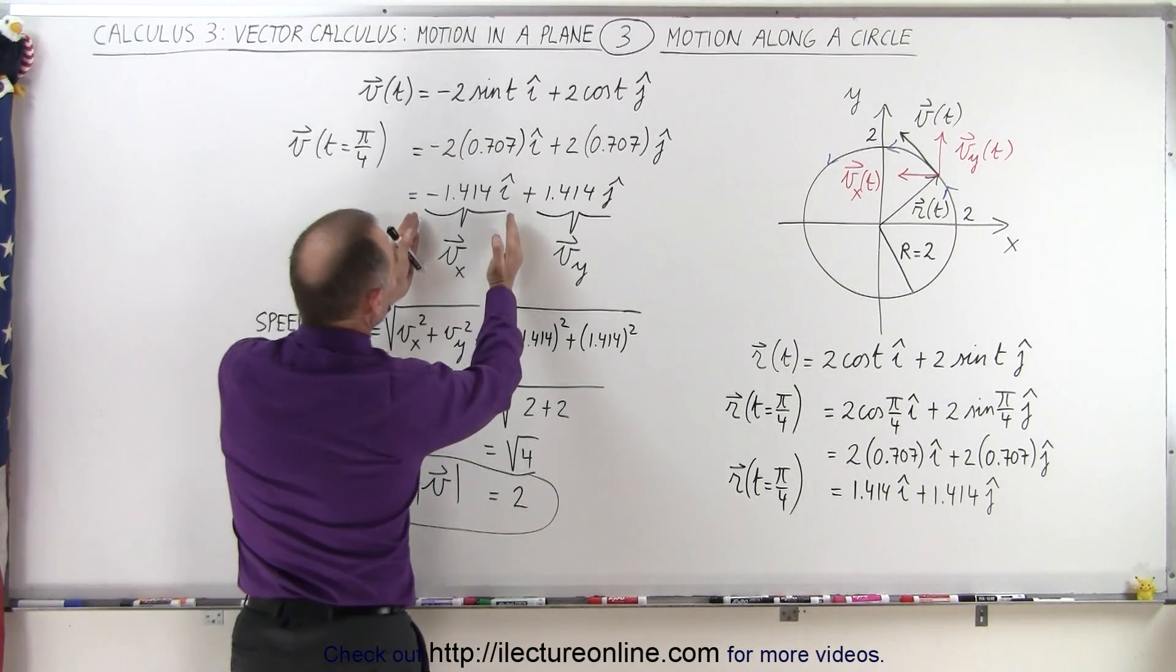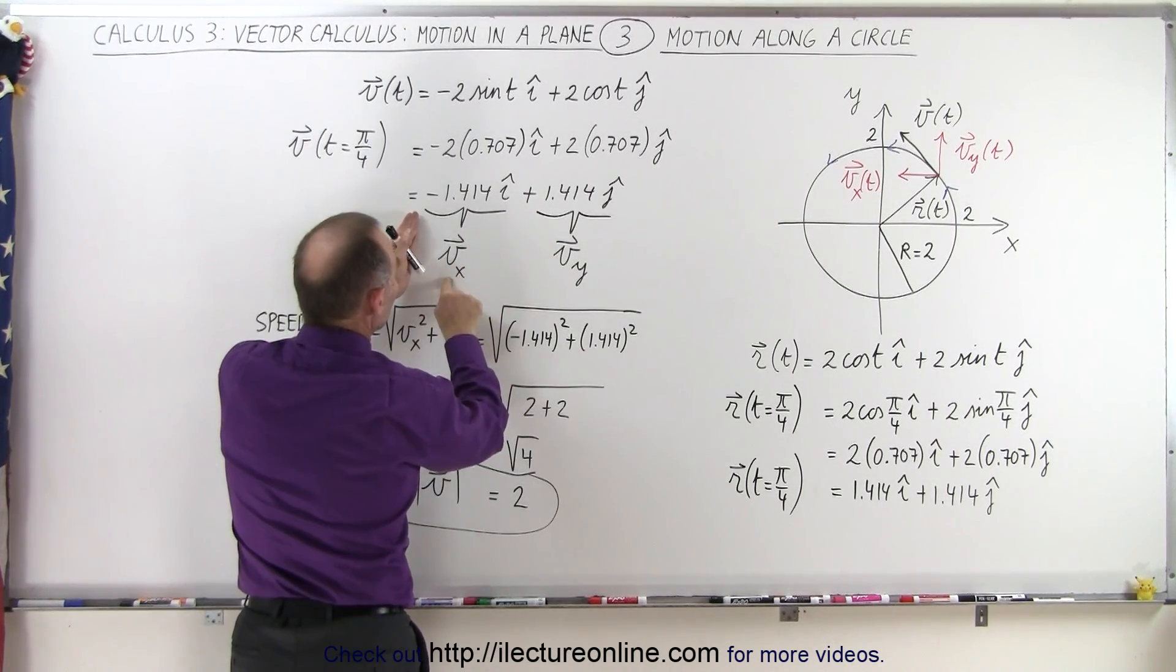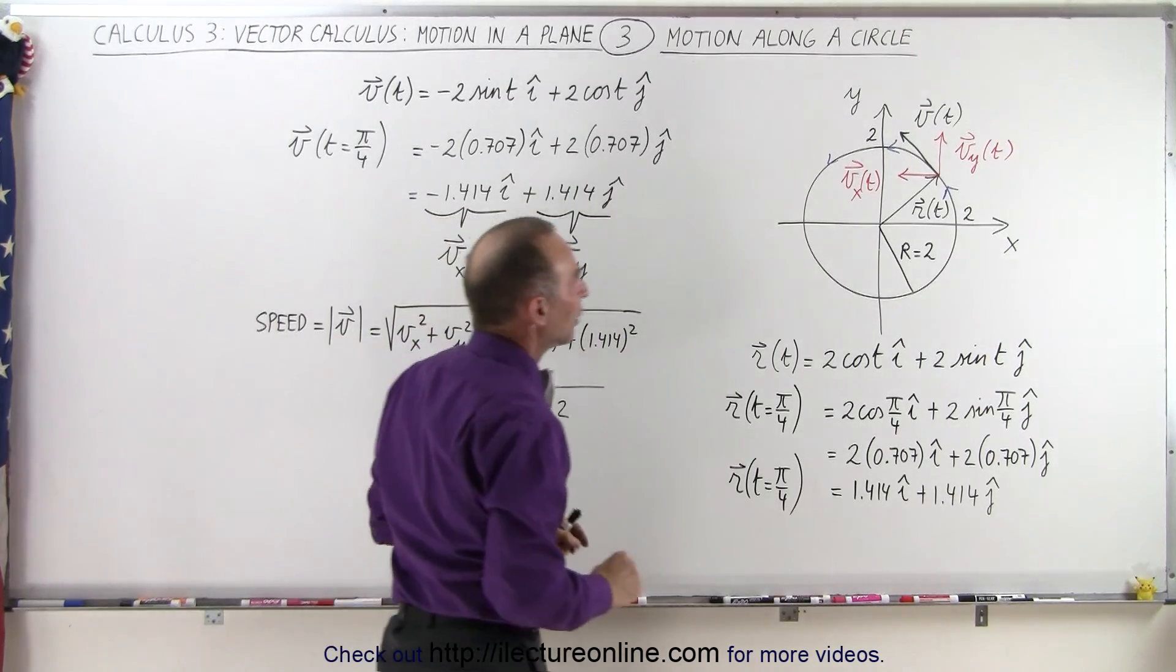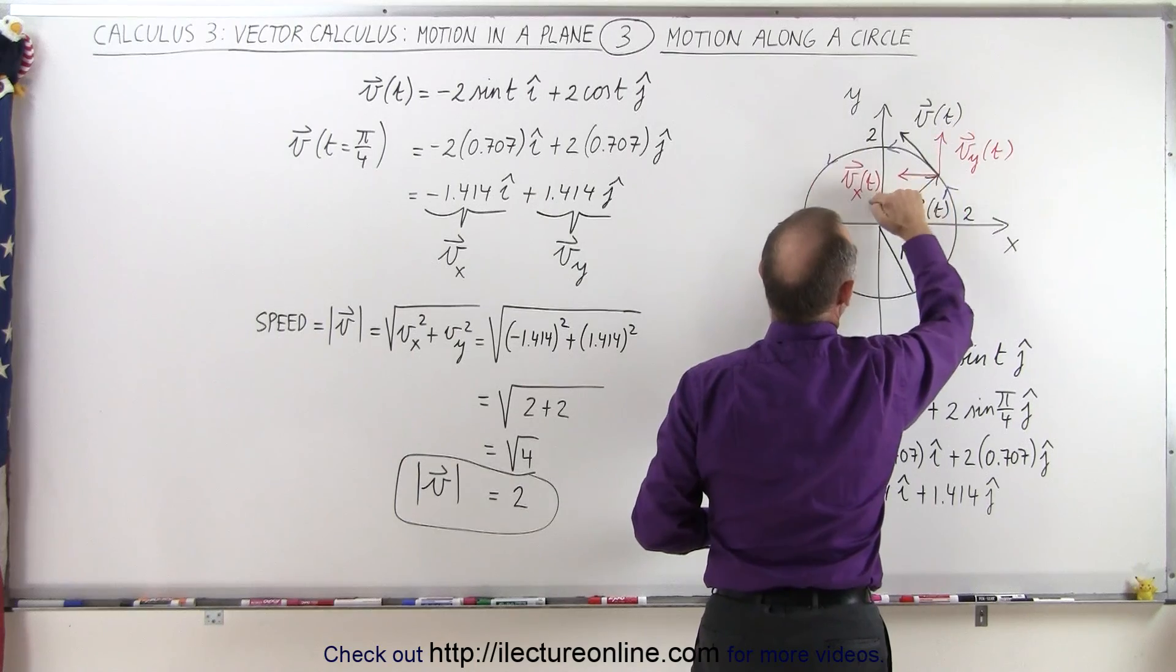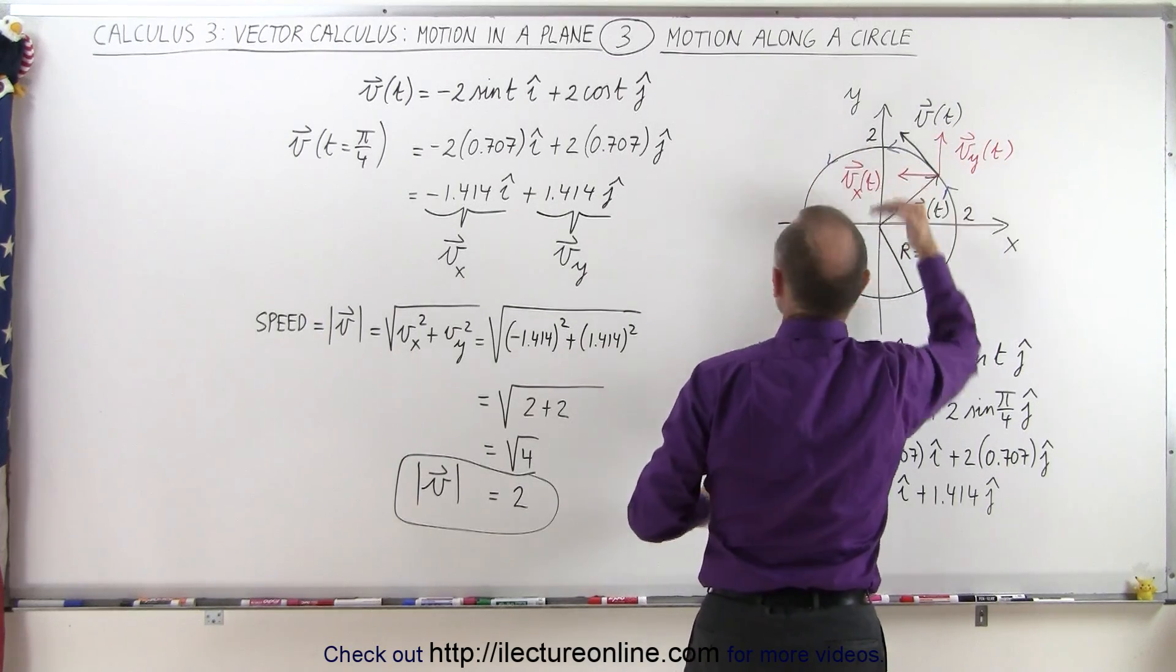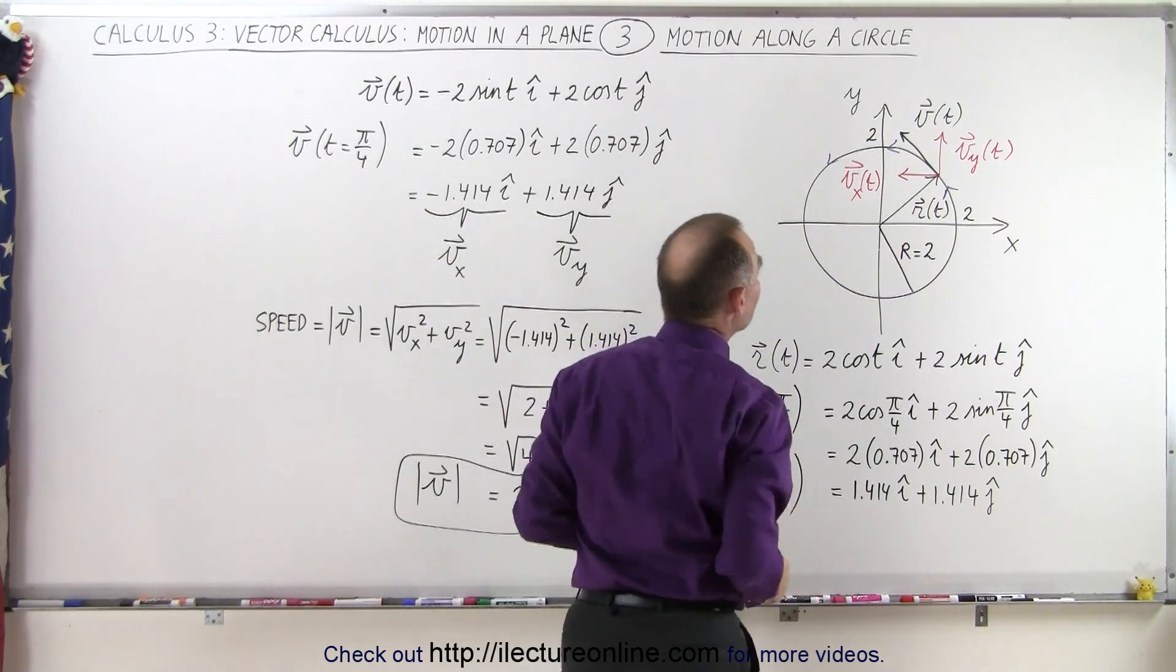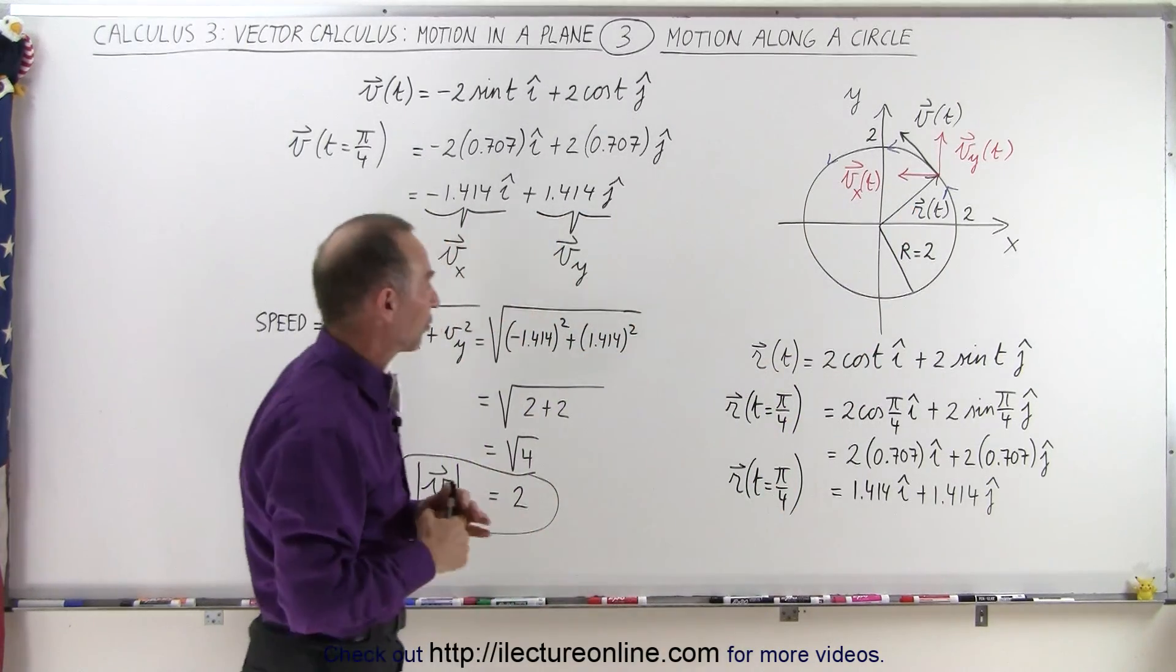Notice that this component gives us the x component of the velocity. This component gives us the y component of the velocity. And notice the y component is pointing upward. The x component is pointing to the left. To the left would be negative. And yes, indeed, that's why we have a negative for the velocity component in the x direction.